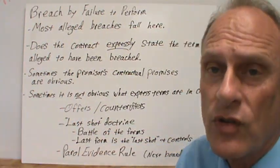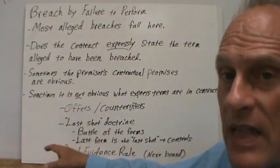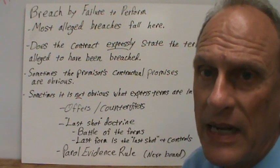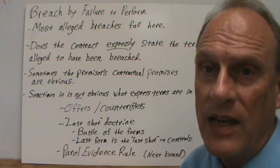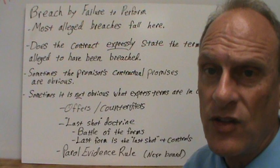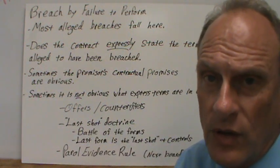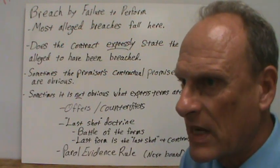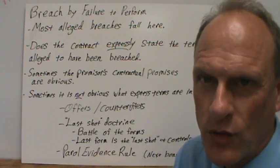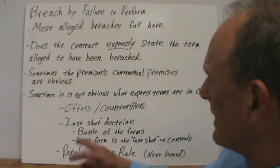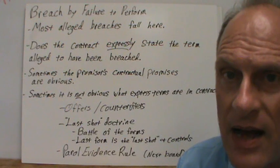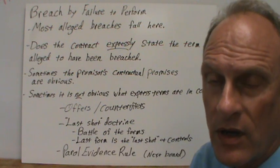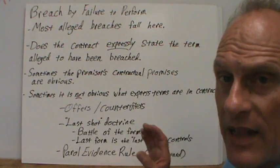The best way to deal with that is mapping out the sequence of all the communications. Very similar to that is the common law last shot doctrine, which comes up primarily in the so-called battle of forms — where a buyer sends a purchase order to a vendor, and the vendor returns with either a counteroffer or acceptance. If it's a counteroffer, forms keep flowing back and forth. The last shot doctrine says that whichever form is last, or if there's action on the last form, that last form controls the transaction.